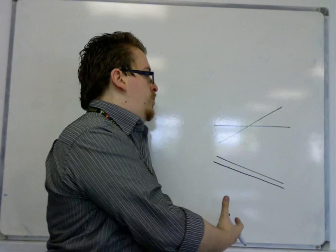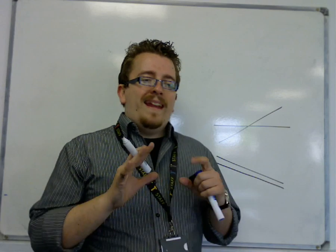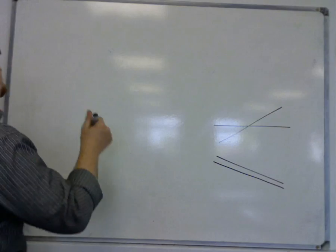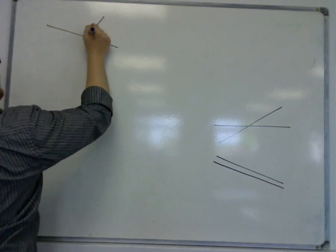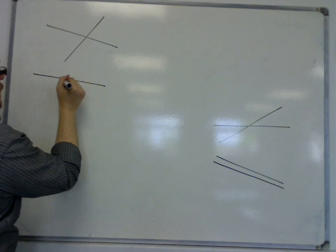So in two dimensions, that's the only possibilities that we can have. In three dimensions, yes, you can have two lines that intersect, or you can have two lines that are parallel.